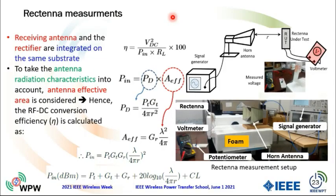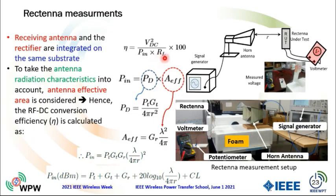This is the rectenna measurement setup. The receiving antenna and the rectifier circuit are integrated on the same substrate. To take the antenna radiation characteristics into account, the antenna effective area for the receiving antenna is considered. Here, the RF-DC conversion efficiency is calculated as P-out over P-in, where P-out equals the DC output voltage squared divided by the resistive load. P-input is the received power density multiplied by the effective area, which can be defined by the received antenna parameters. P-input in dBm is defined by the transmitted power, the gain of the receiving antenna, and the transmission or channel losses.